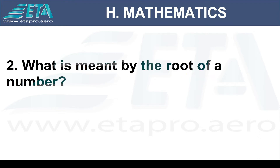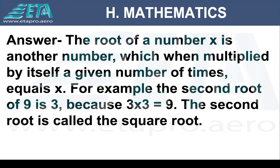What is meant by the root of a number? The root of a number x is another number which, when multiplied by itself a given number of times, equals x. For example, the second root of 9 is 3, because 3 times 3 equals 9. The second root is called the square root.